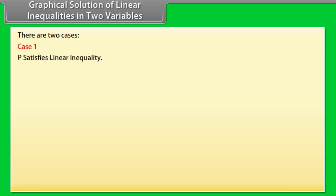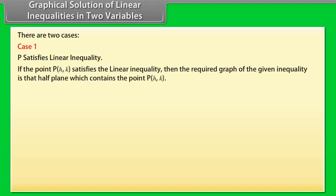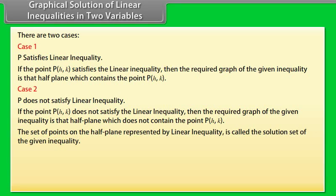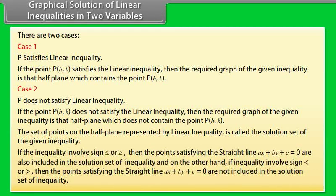Case 1: P satisfies the linear inequality. If the point P(h, k) satisfies the linear inequality, then the required graph is the half-plane which contains the point P(h, k). Case 2: P does not satisfy the linear inequality. If the point P(h, k) does not satisfy the linear inequality, then the required graph is the half-plane which does not contain the point P(h, k). The set of points on the half-plane represented by the linear inequality is called the solution set of the given inequality. If the inequality involves ≤ or ≥, then the points satisfying Ax + By + C = 0 are also included in the solution set.